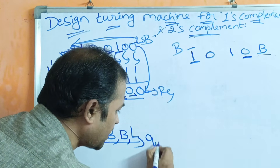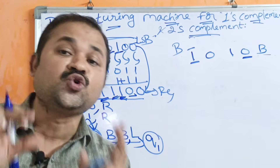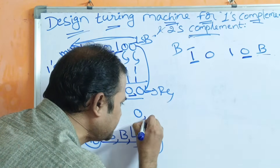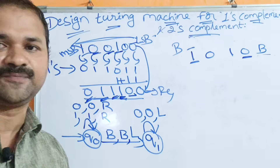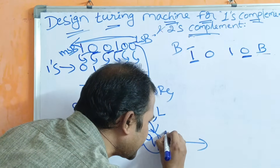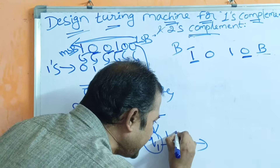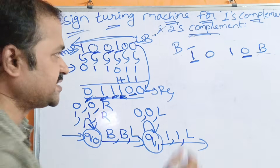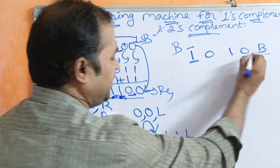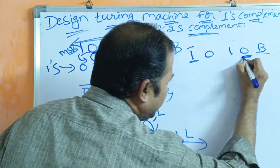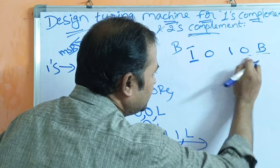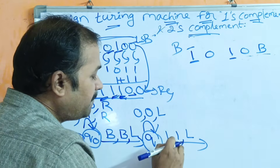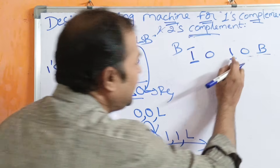Now on q1: up to the first 1, keep all bits the same. On q1, if we read 0, keep as 0 and move the head towards the left. When we read 1 on q1, keep it as 1 and move the head towards the left — we repeat this up to the first 1. So 0 is written as is, then 1 is read and kept as is, and we move the head towards the left.